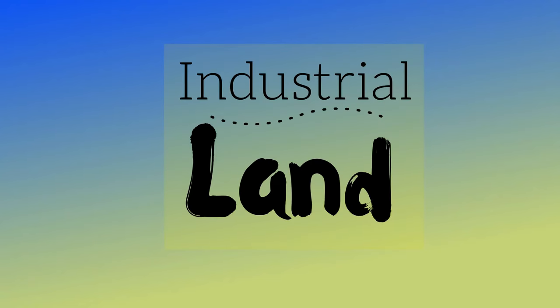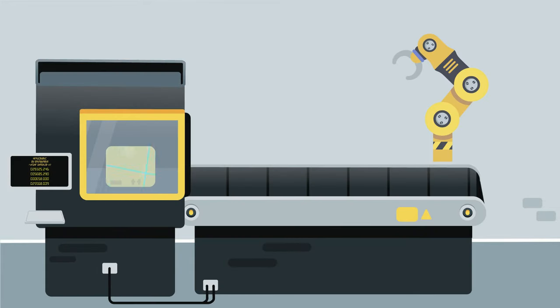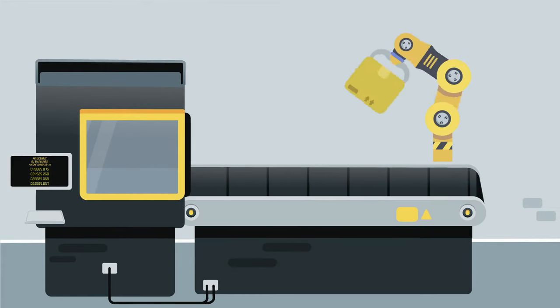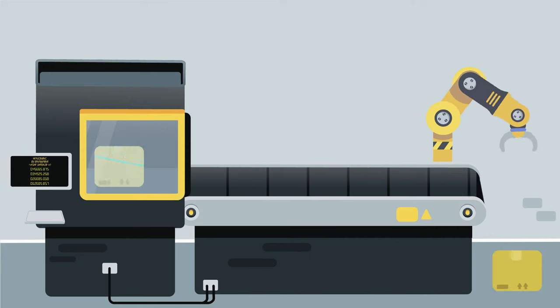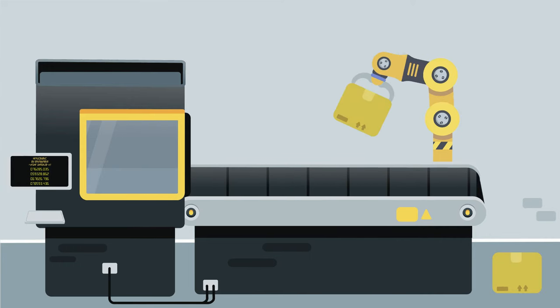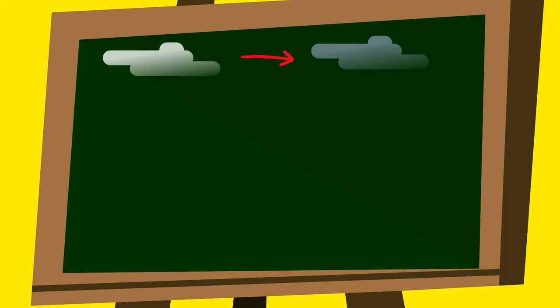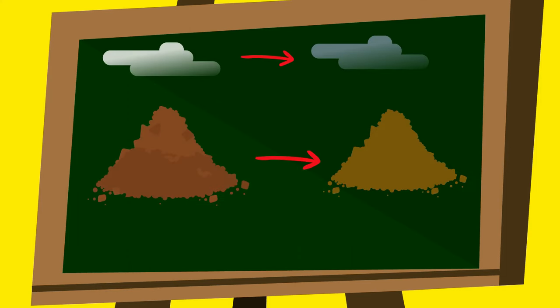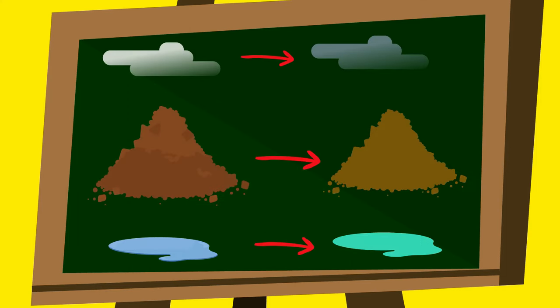Next up is industrial land. Industrial land is land that is used for manufacturing, processing, or storing raw materials. Industrial land can cause many environmental impacts on air quality, soil, and groundwater.